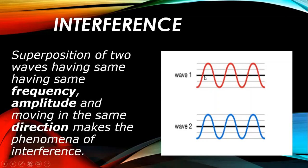You can see frequency as the number of cycles per second. For example, if wave one has three cycles — one, two, three — then wave two also has one, two, three cycles. The number of cycles per second must be the same.